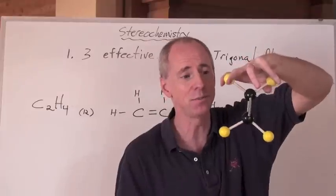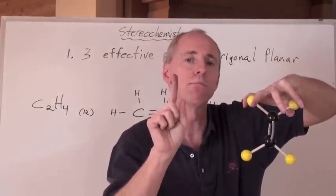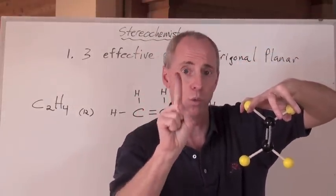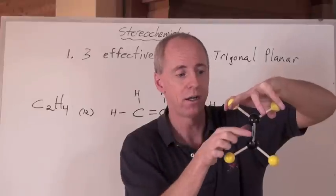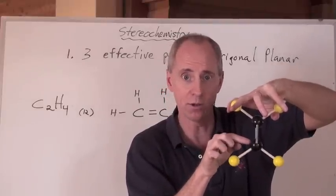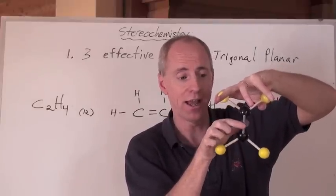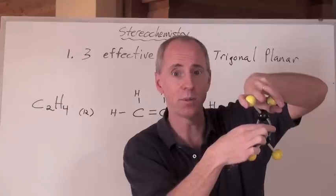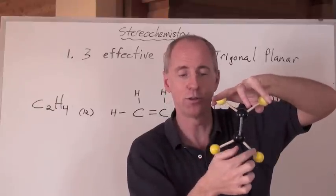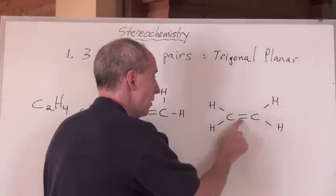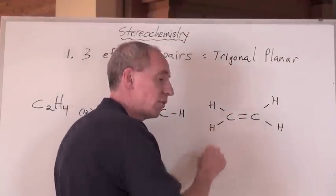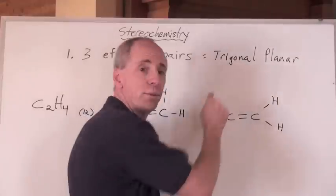Now, if this makes sense to you, the rule is count multiple bonds as one effective pair. This carbon right here, which we're going to call the central one here, has one effective pair. That double bond is one, two, three. One, two, three. Three effective pairs around that means trigonal planar shape.